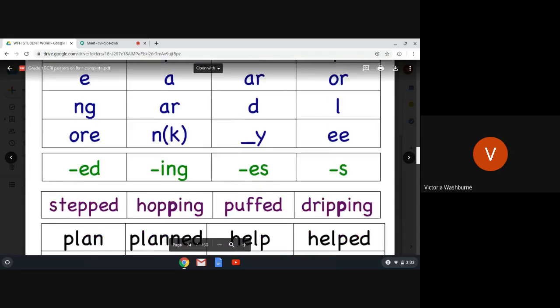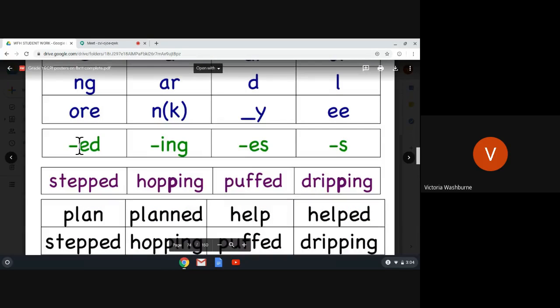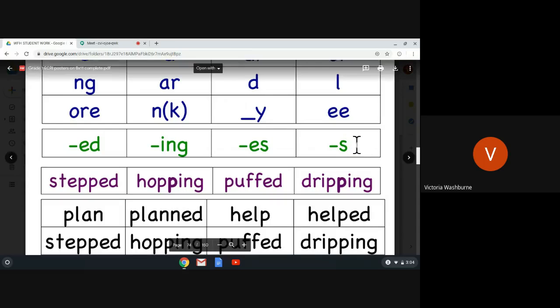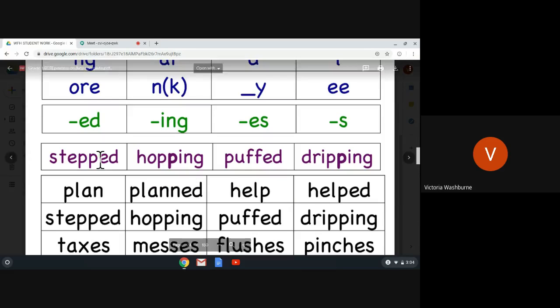Here are those endings we've been talking about in green. In green right here we have E-D, which is ED, D, or T. You'll have to say the word and see which one sounds correct to you. This ending is ING, ES, and S or Z. So let's look at these words right here. They have our endings on them, they're in purple. Also, there's a doubling of the letter right here.